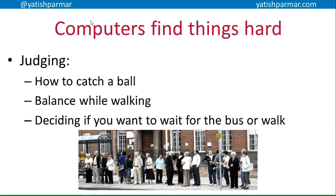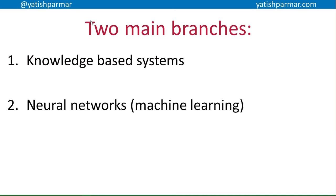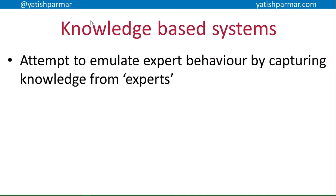There are two main branches we're concerned with. The first is knowledge-based systems, and the second is neural networks — machine learning. Knowledge-based systems are basically an attempt to emulate an expert's behavior. Someone captures knowledge from experts, that knowledge is encoded into the system, and the knowledge-based system uses that encapsulated knowledge to figure out how to resolve a problem.